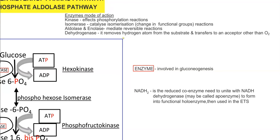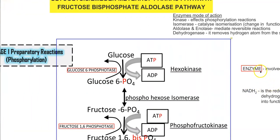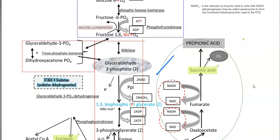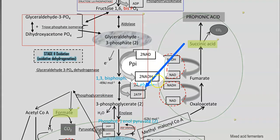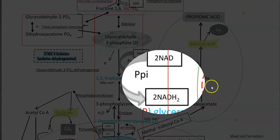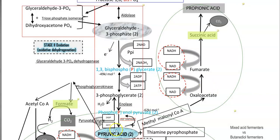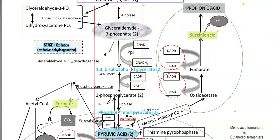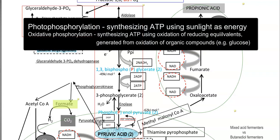In the glycolysis process, it mainly operates to synthesize two things: one is formation of energy in the form of ATP, and another is formation of reducing equivalents, that is NADH₂. The energy production — ATP manufacturing — takes place at the substrate level, so it is technically referred to as substrate-level phosphorylation. You may already be aware that there are two other phosphorylation types: photophosphorylation and oxidative phosphorylation, also existing in living systems.